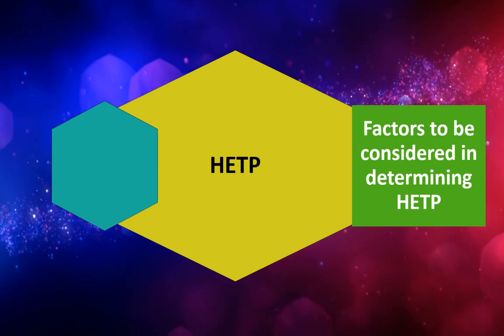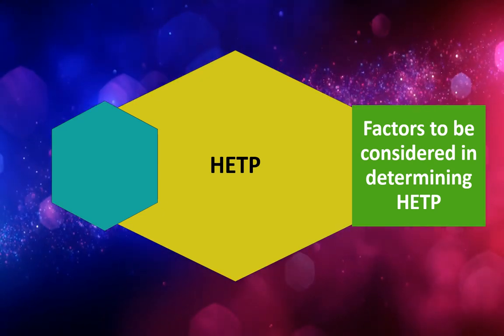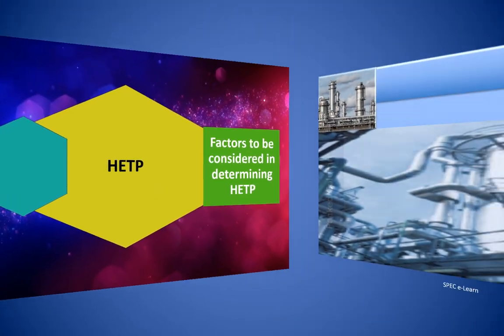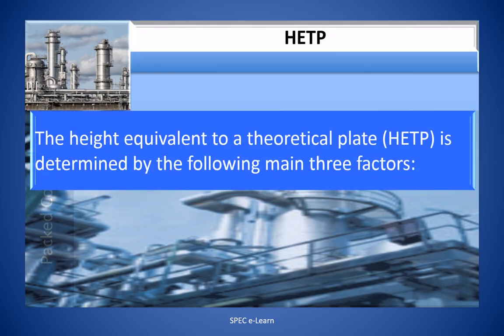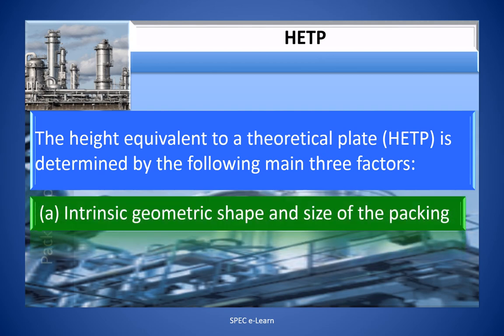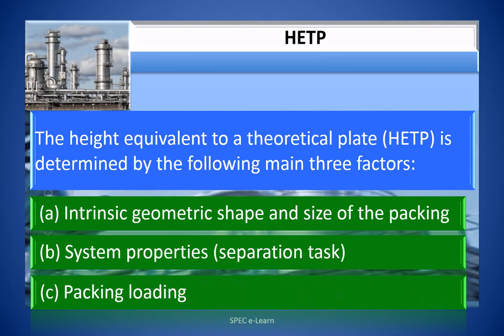Factors to be considered in determining HETP: The height equivalent to a theoretical plate (HETP) is determined by the following three main factors: A. Intrinsic geometric shape and size of the packing. B. System properties. C. Packing loading.